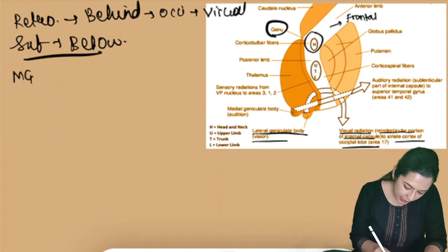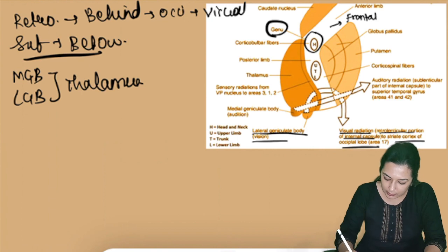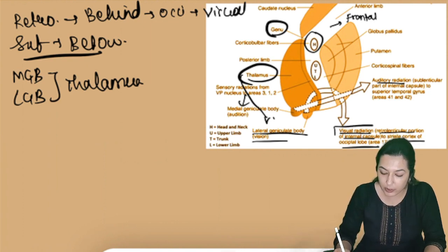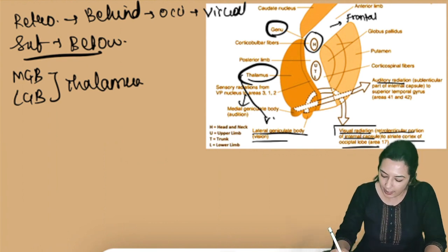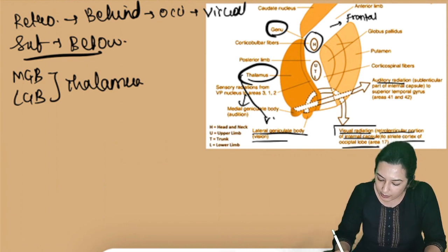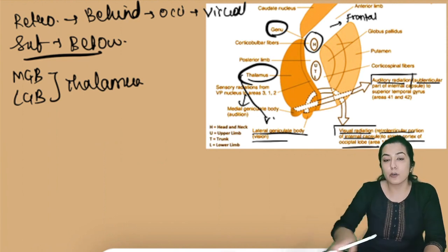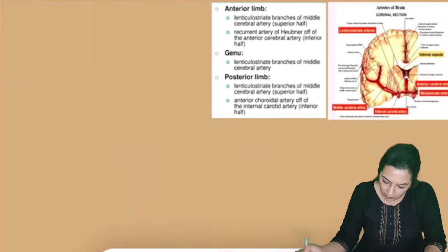The lateral geniculate body and medial geniculate body are parts of the thalamus. From the medial geniculate body, auditory radiations pass, and from the lateral geniculate body, visual radiations pass. Visual radiations travel behind the internal capsule forming the retrolentiform portion, while auditory radiations pass below the internal capsule forming the sublentiform portion and travel toward the temporal lobe.